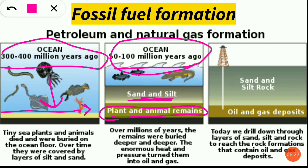And in this way they got buried well. Over millions of years, the remains were buried deeper and deeper. The enormous heat and pressure turned them into oil and gas. The layering from above exerted pressure and the temperature raised below, so these dead remains converted into oil and gas deposits. And today we drill down through the layers of sand, silt, and rocks to reach the rock formations that contain oil and gas deposits. This is how fossil fuels are formed.